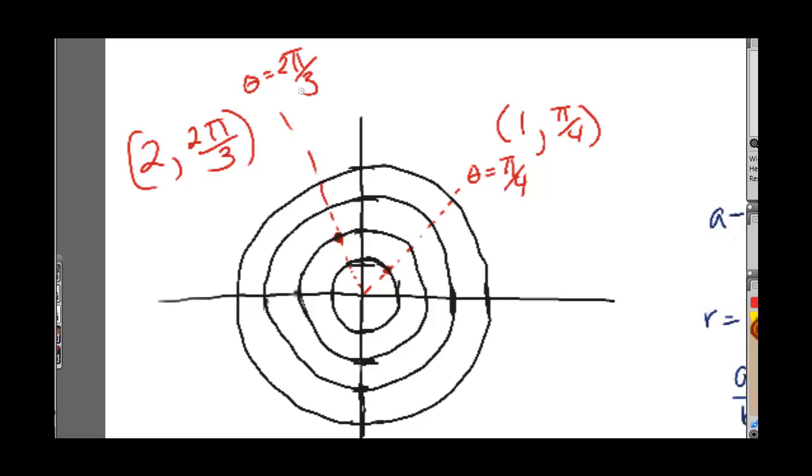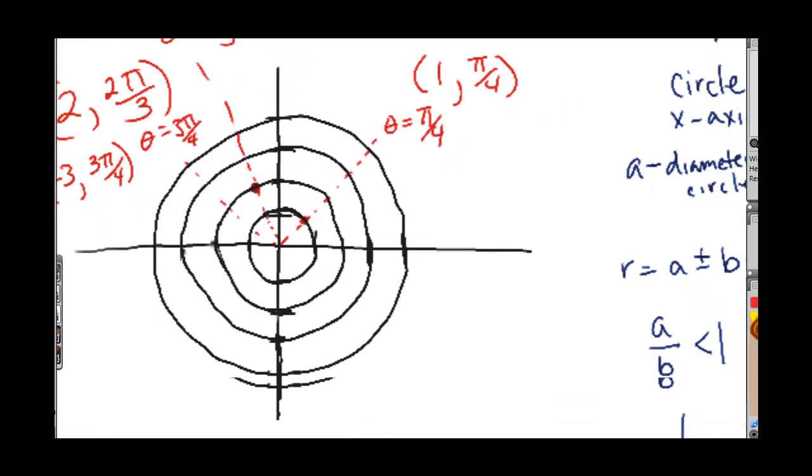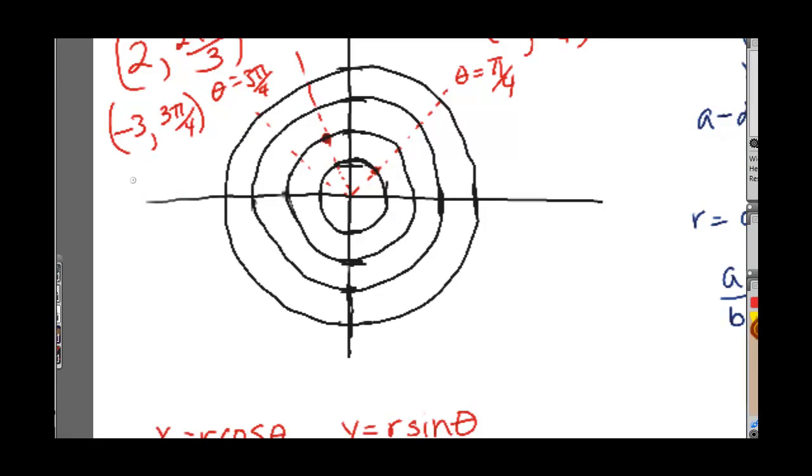Now let's do negative 3 comma 3 pi over 4. So that's 45 degrees in the second quadrant. But instead of going in the 3 pi over 4 direction, we have to go in the exact opposite direction because of the negative radius right there. Remember it's negative 3. So because of that we have to go in the exact opposite direction which is in the 7 pi over 4 direction. And we got 3 in that direction, 1, 2, 3. So this point right here is your negative 3 comma 3 pi over 4. Even though we went in the 7 pi over 4 direction, it's going to be negative.